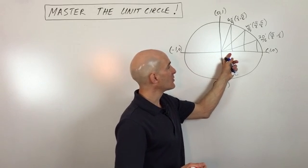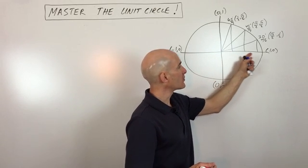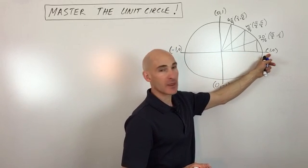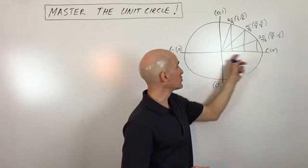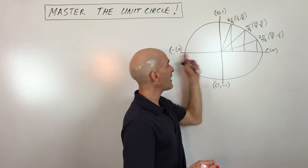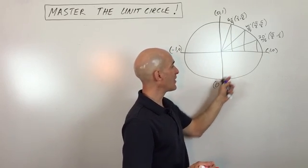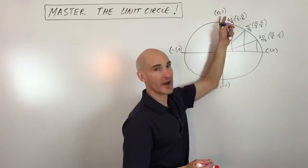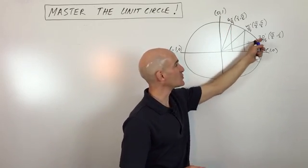Basically, what a unit circle is — it's a circle with a radius of one unit. You can see if you go to the right, up, left, or down, it's always one. So the radius is one.